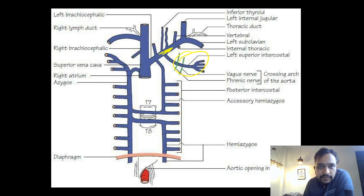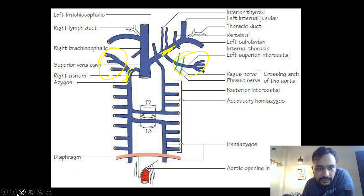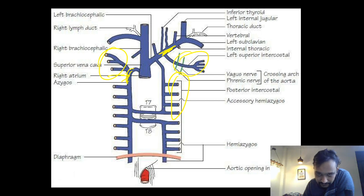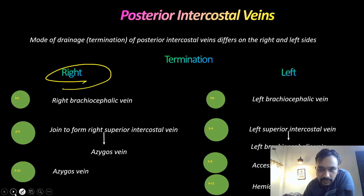In this picture we can see: the left superior intercostal vein drains into the brachiocephalic, and the right posterior intercostal veins drain into the azygous vein. The 5th, 6th, 7th, and 8th left posterior intercostal veins drain into the accessory hemi-azygous vein, and the 9th, 10th, and 11th drain into the hemi-azygous vein.